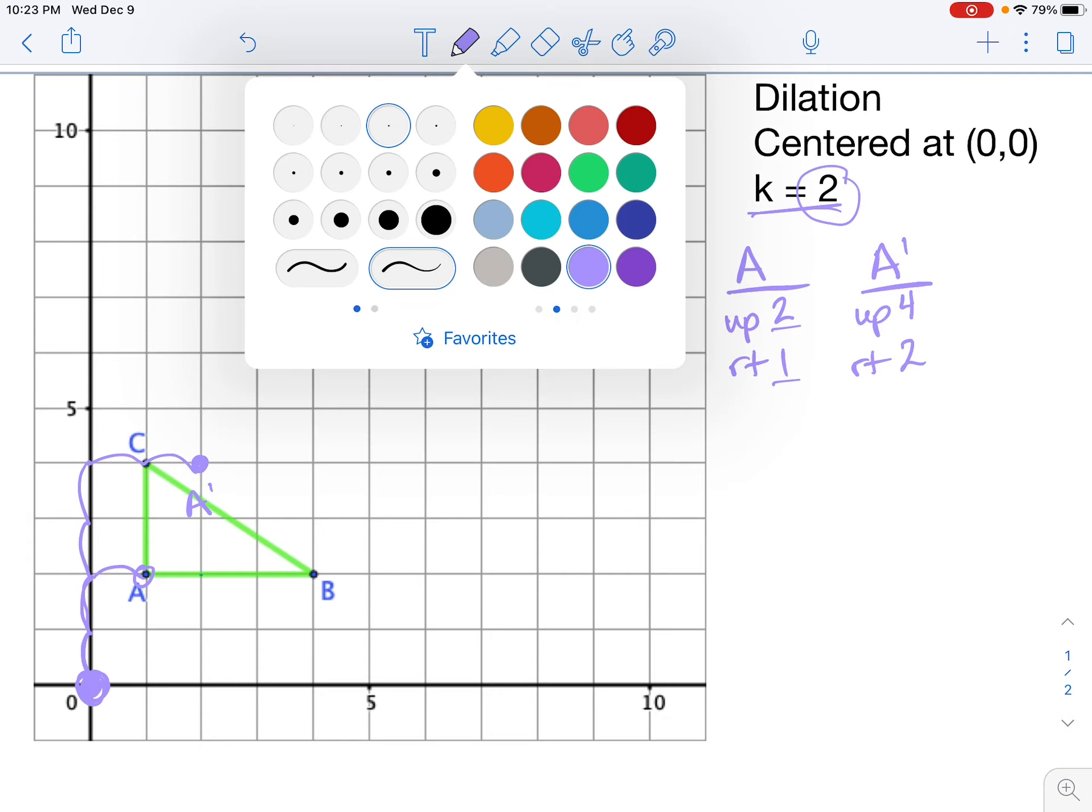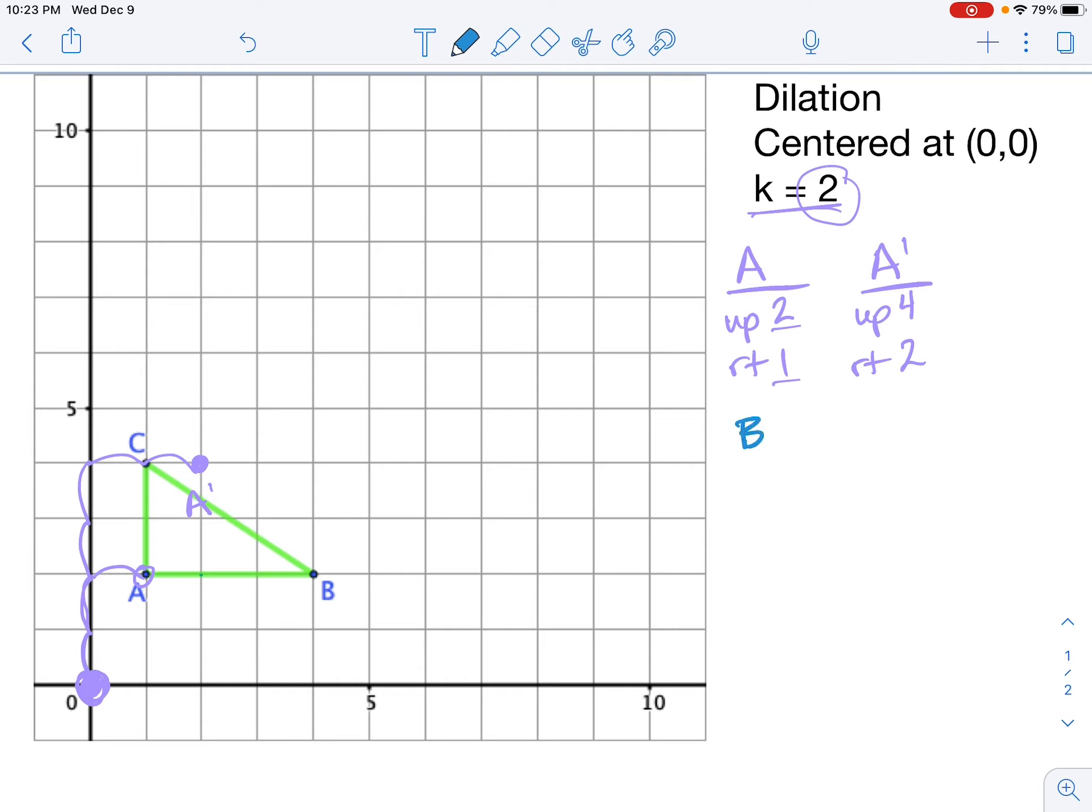All right, we're going to do the same thing for B. To get from the center of dilation to point B, I have to go up 2 and right 4. So that means B prime will be the same direction, but 2 times the distance, so up 4, right 8. Always go back to the center of dilation, which in this case is the origin, and we will go up 4, right 8. So this is the location of B prime.